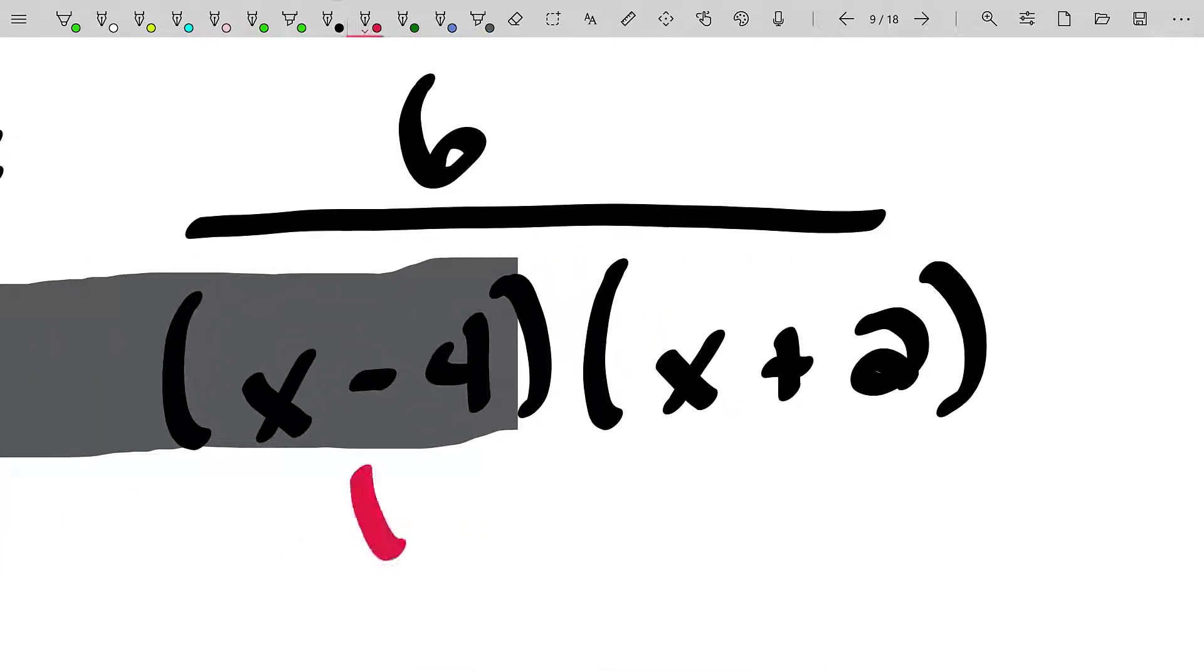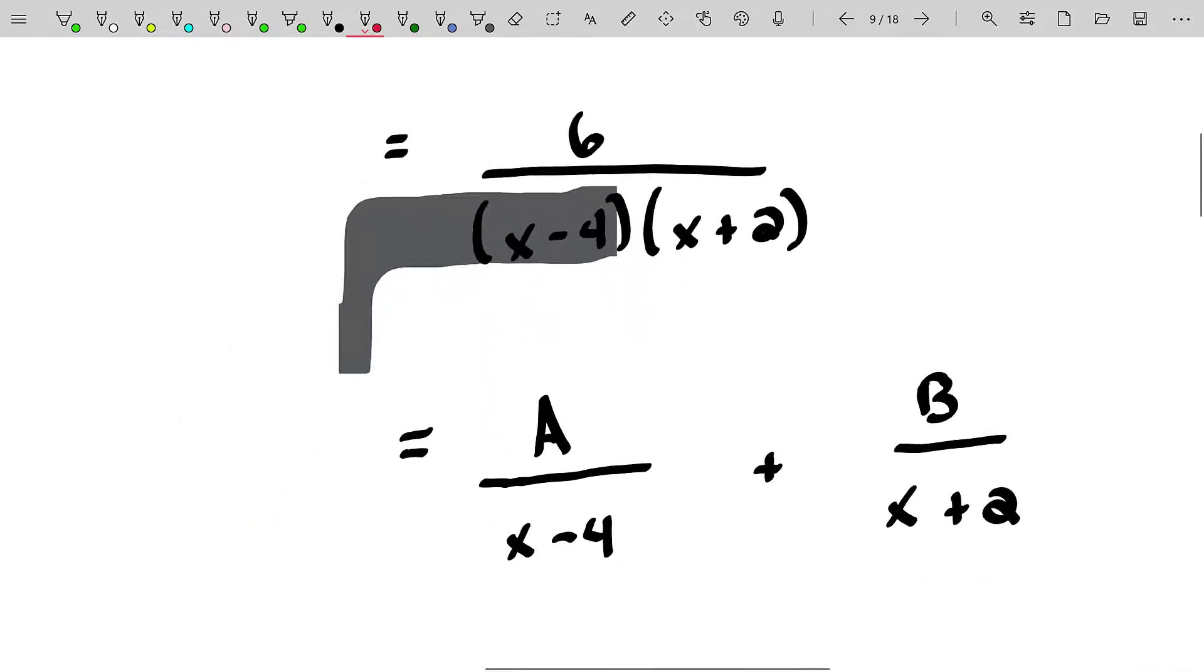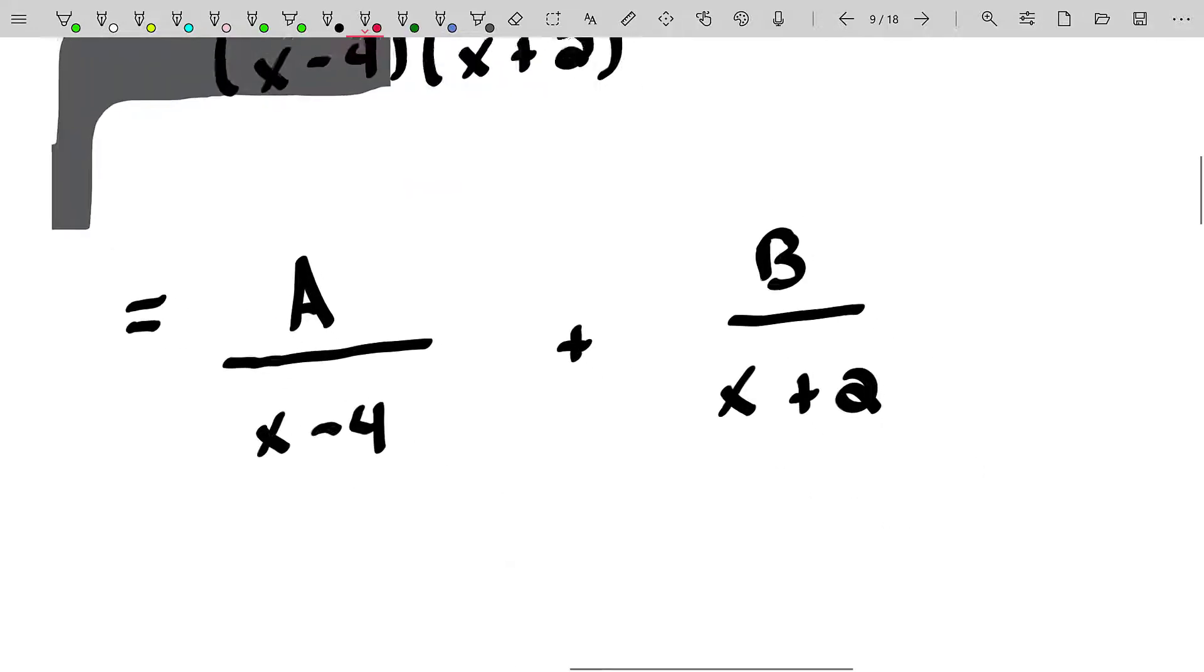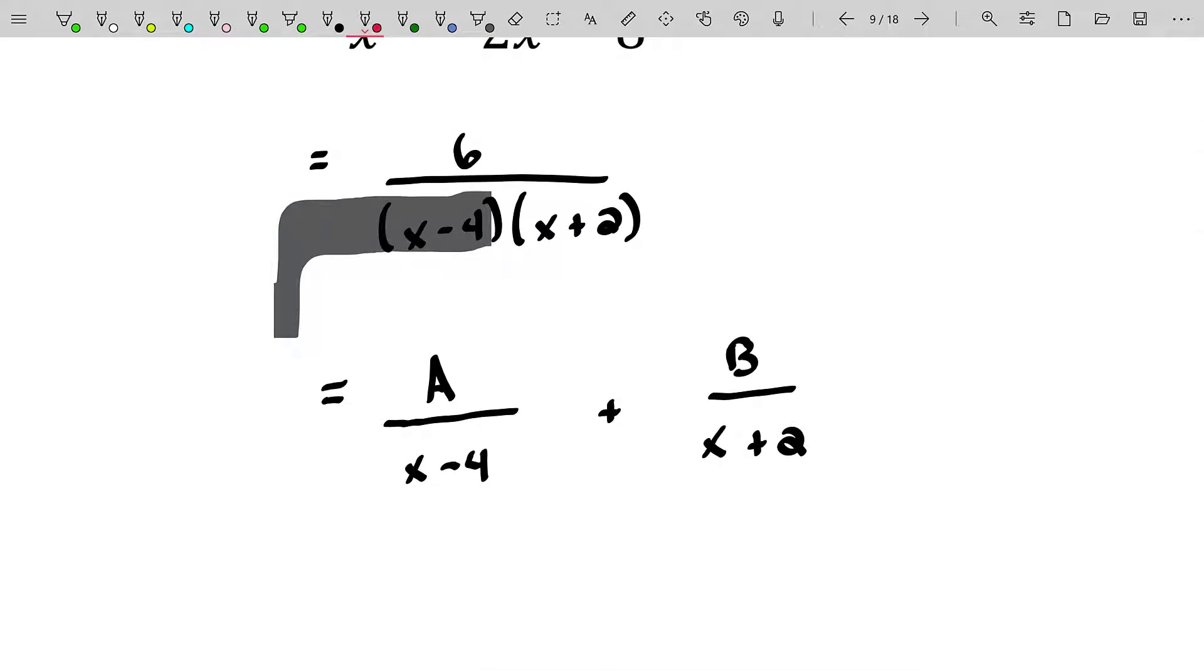And notice if you let X equal 4, that actually would normally cause division by zero right there. However, we're going to ignore that. And it's going to give us what we call the residual. And the residual is going to be the numerator of the X minus 4 in the partial fraction decomposition. So, for example, letting X equal 4 in this remaining fraction, you get that the numerator will be 6 and the denominator will be 6 as well. And that will actually be the numerator of our partial fraction decomposition term of something over X minus 4.